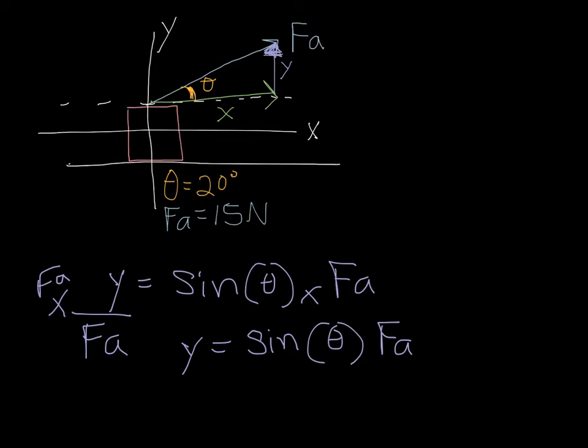So then I can plug in my information. I can plug in that y is equal to the sine of 20 degrees times my force applied, which is 15. Let's add that in there. So that's 15 newtons. So sine of 20 times 15 would tell me the magnitude of my y vector here. And it's acting in the positive y direction, so that's going to be a positive number.